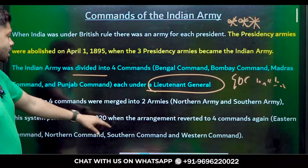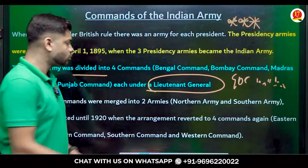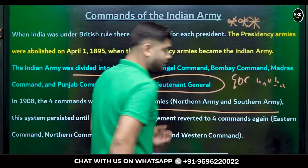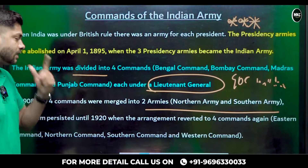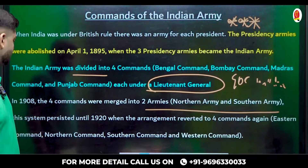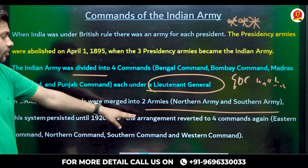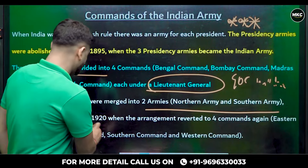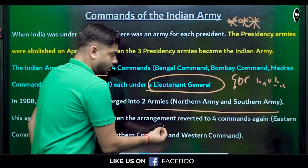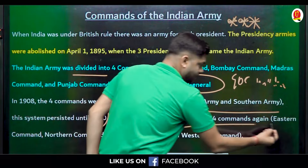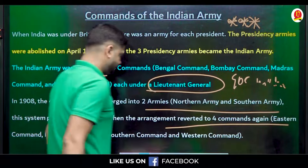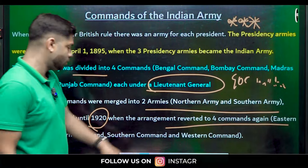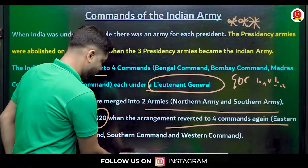In 1908, the four commands were merged into two armies. Remember, this is pre-independence. Then again in 1920, four commands were re-formed: Eastern Command, Northern Command, Southern Command, and Western Command.